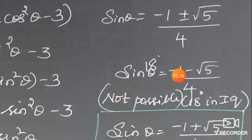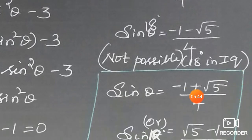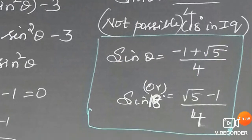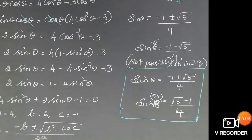Therefore, sin θ = (−1 + √5)/4, which is positive. So sin 18° = (√5 − 1) / 4.